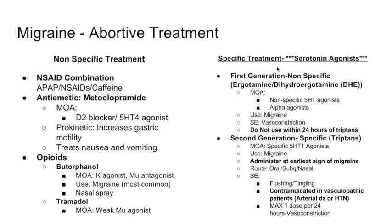Now we go into the specific treatments of migraine. When I talk about specific treatments, I'm talking about serotonin agonists. Serotonin receptors are found on meningeal blood vessels and cause vasoconstriction, relieving blood pooling. The specific treatments are separated into first generation — nonspecific serotonin agonists — and second generation, which work on specific serotonin receptors.